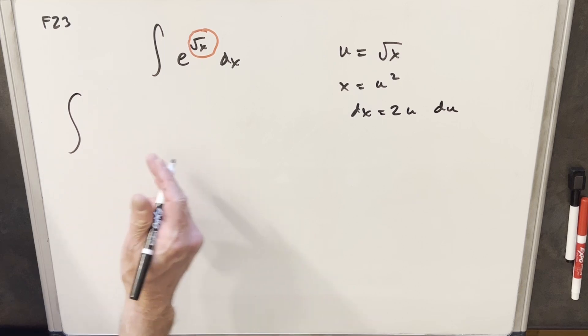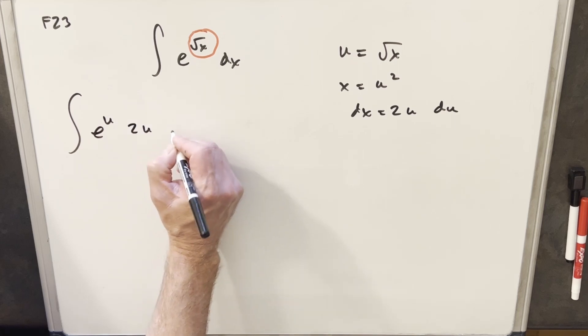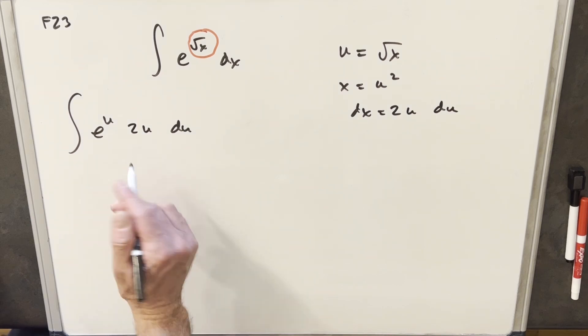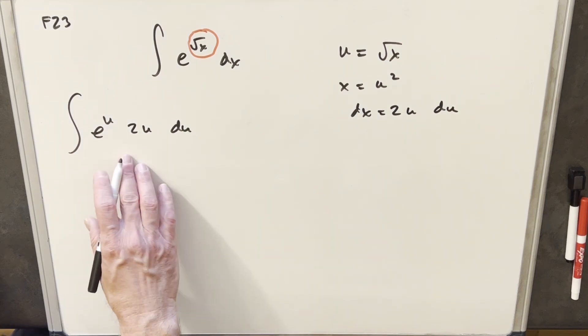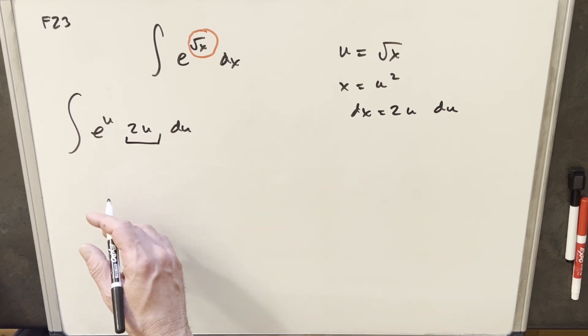Now I'll make my substitution. So we're going to have e to the u, our dx is going to be just 2u du. This is a perfect place for us to use integration by parts, just because the thing I like about using integration by parts in this situation is we know this 2u is going to reduce all the way to 0, and so this is going to clean up pretty nice.